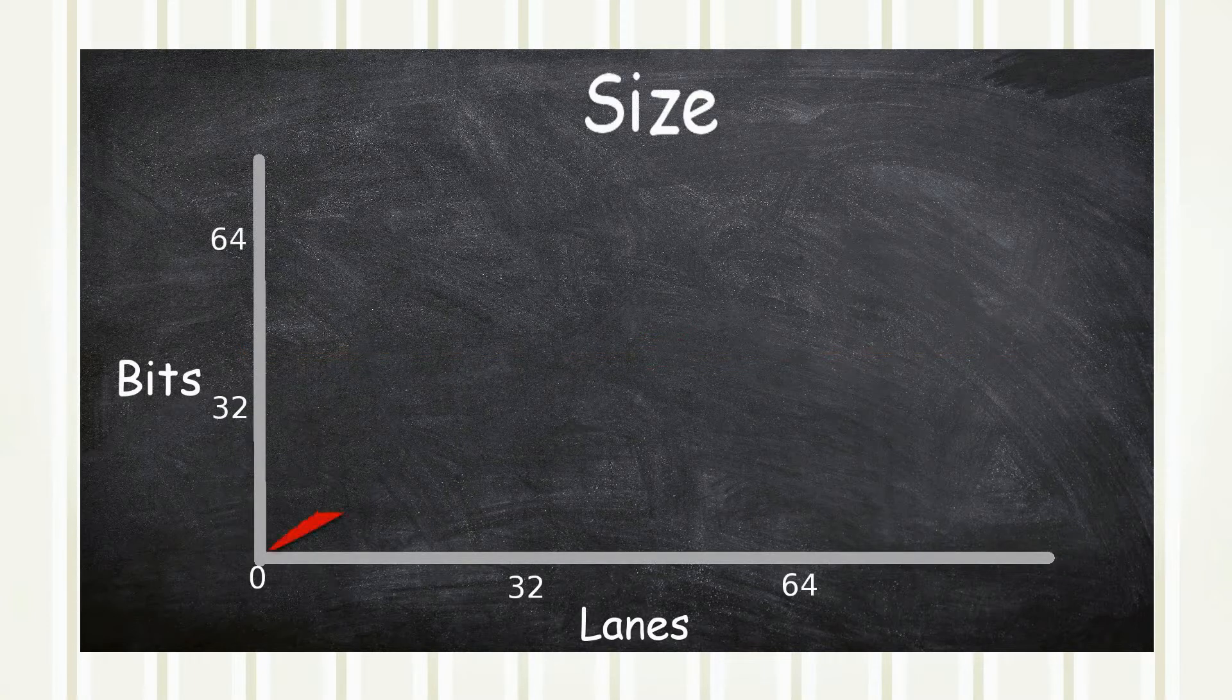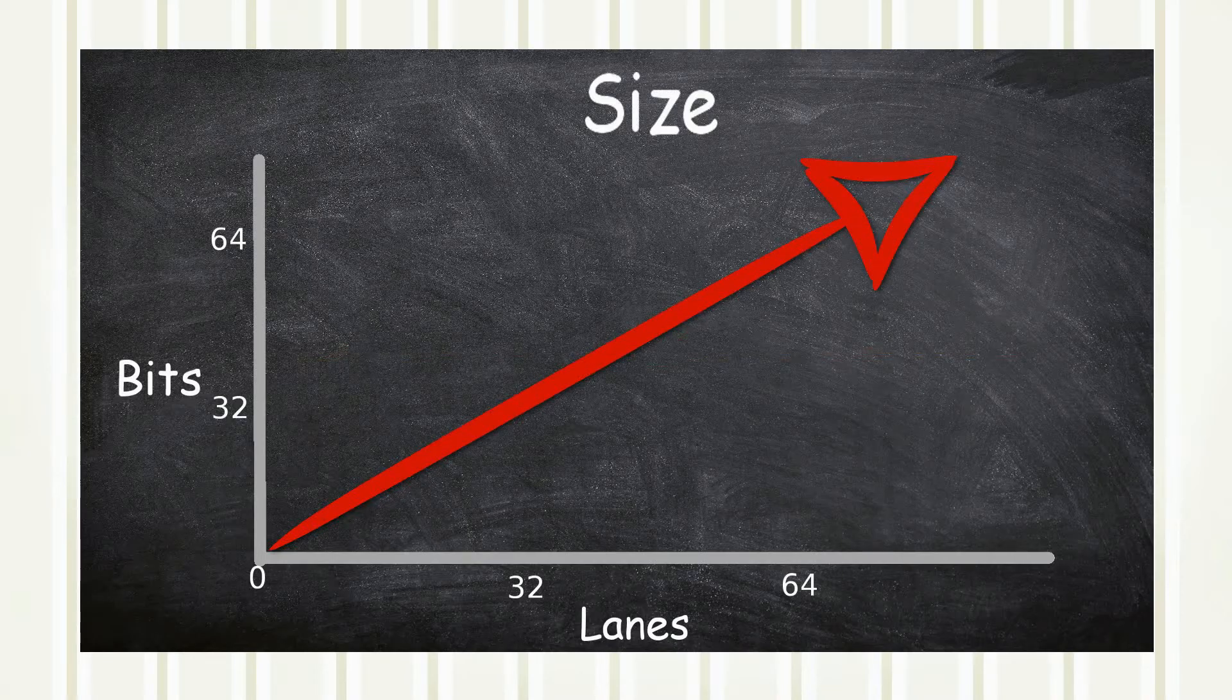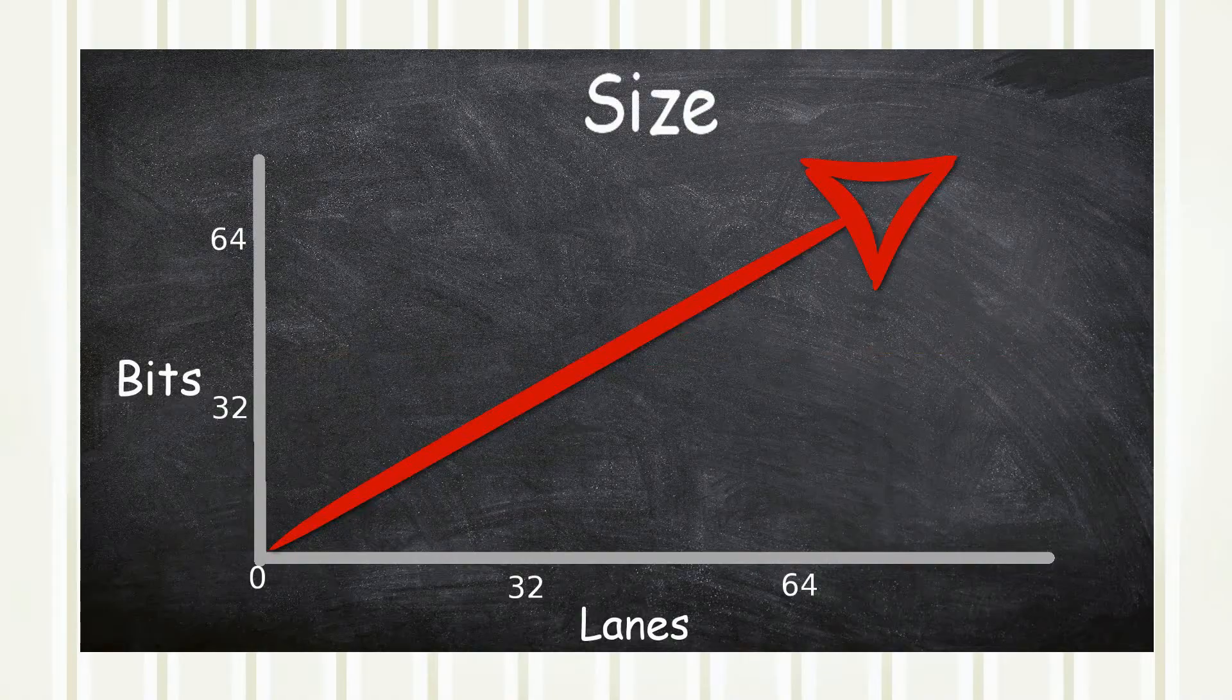Because as the number of lanes increases, so will the area that is needed. For example, a 32-bit bus will require 32 lanes and a 64-bit will need 64 lanes.